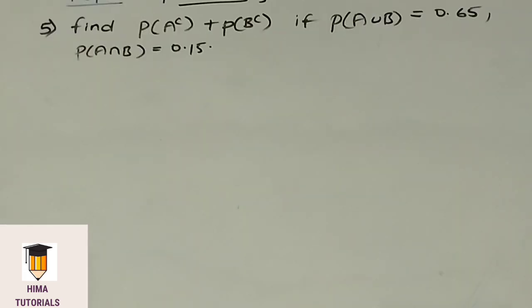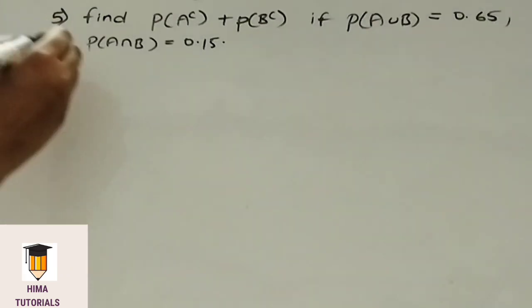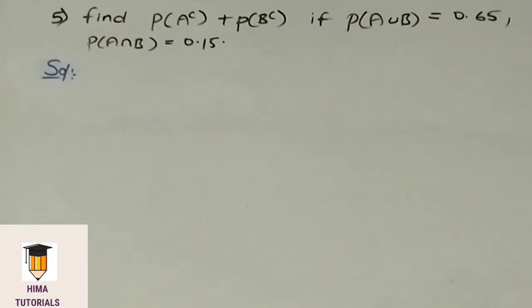Coming to the given question: Find P of A complement plus P of B complement, if P of A union B is equal to 0.65 and P of A intersection B is equal to 0.15. Coming to the solution — we need to find P of A complement plus P of B complement.